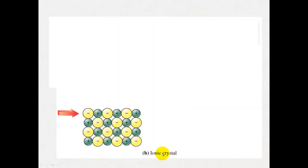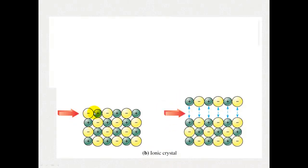So if we have a look at an ionic crystal structure with a force applied, once that force is applied, those like charges align and it causes repulsion. The crystal lattice then shatters.